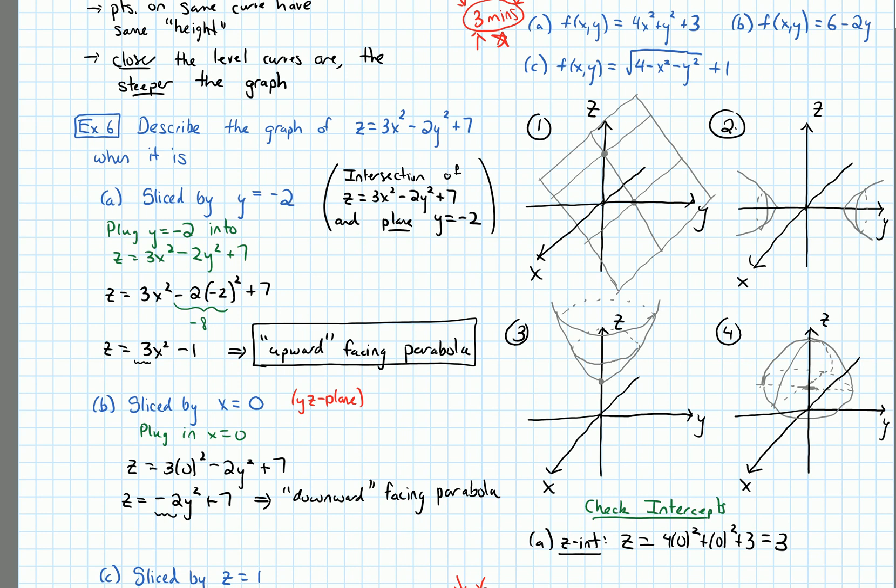I forgot to say something earlier. There's one of these functions that I can actually identify very quickly, and it's part B, because part B is a function that we've seen before. I can rewrite this as Z equals 6 minus 2Y, and this is a linear function. So as a 3D graph, this means its graph should be a plane, which means it's got to be 1. So B should match up with 1. Recognizing linear functions can be really helpful in matching questions, because I know the graph should be a plane.